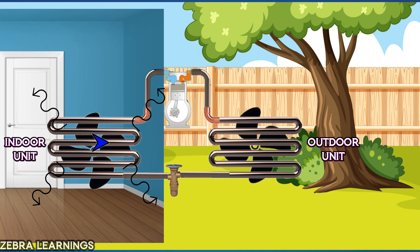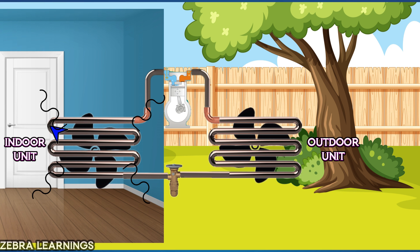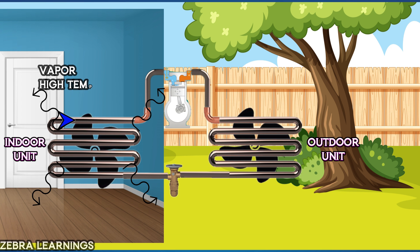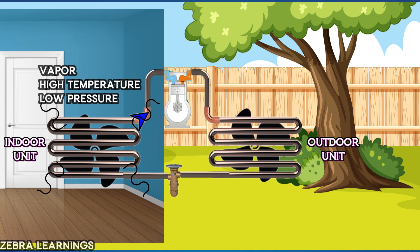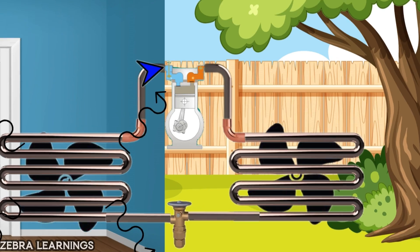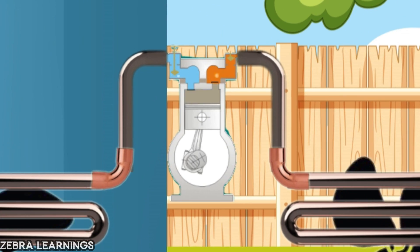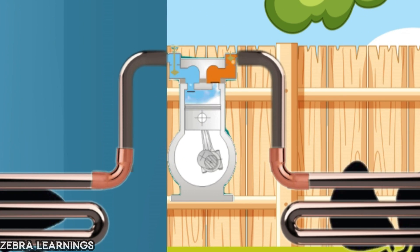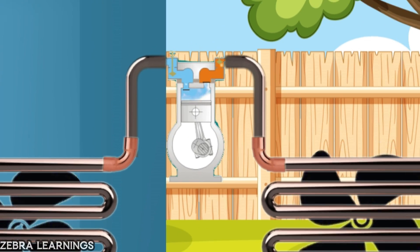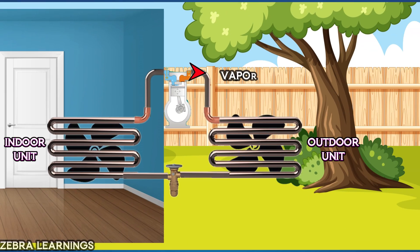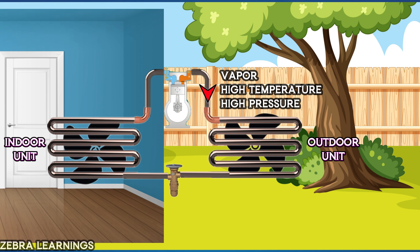This gives us cool air. The refrigerant that comes out of the evaporator is in the vapor stage, high temperature, and low pressure. It then goes to the compressor. The compressor compresses the refrigerant and sends it out at high pressure, high temperature, and vapor stage.